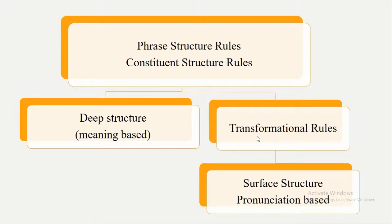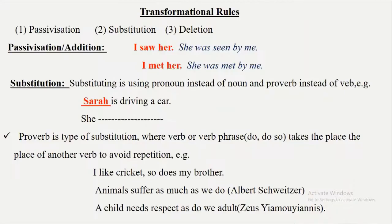Deep structure represents the meaning of sentences, while surface structure operates at the syntactic level, pronunciation level, and morphemic level. We have talked about transformational rules and their basic components — deep and surface structure. Now we are going to talk about these rules in detail. There are three rules in terms of transformational rules: passivization, substitution, and deletion.